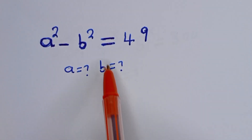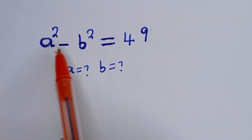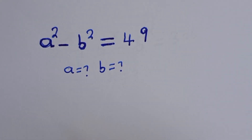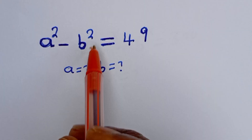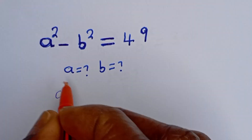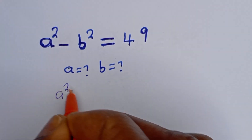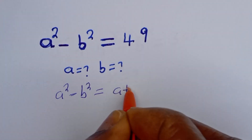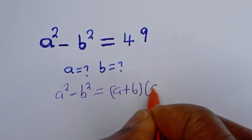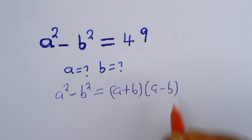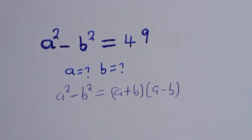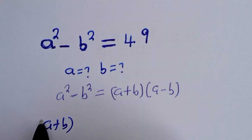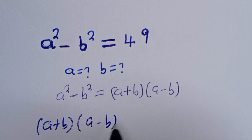Hello, how to solve for A and B in this equation? We have A squared minus B squared is equal to 49. Now, if you look at this, this is in the form of a perfect square. That is, if you have A squared minus B squared, this is equal to A plus B, bracket A minus B. Then A plus B bracket A minus B is equal to 49.